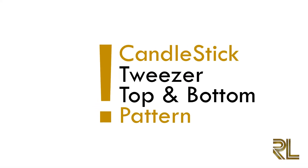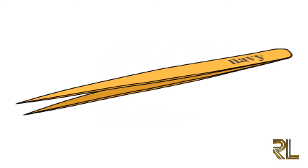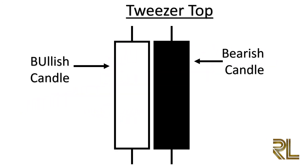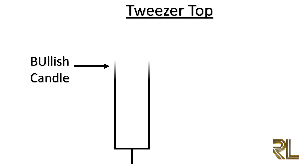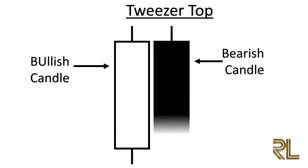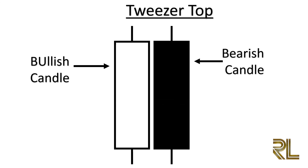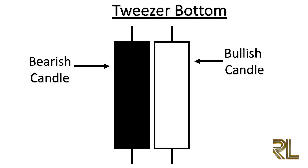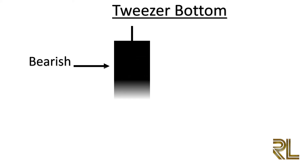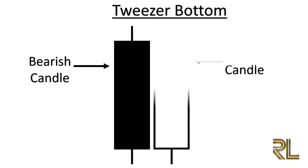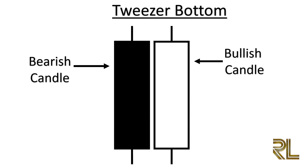The next candlestick pattern is the tweezers top and bottom. The tweezers top formation is considered a bearish reversal pattern seen at the top of an uptrend. The tweezers bottom formation is interpreted as a bullish reversal pattern seen at the bottom of a downtrend.